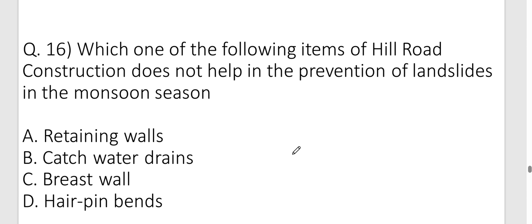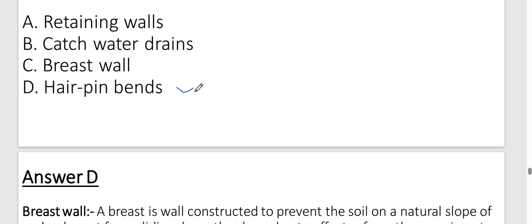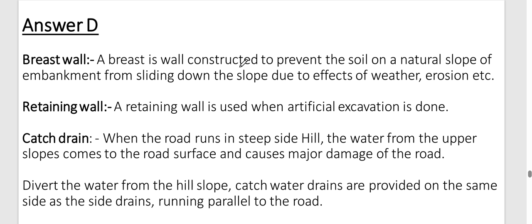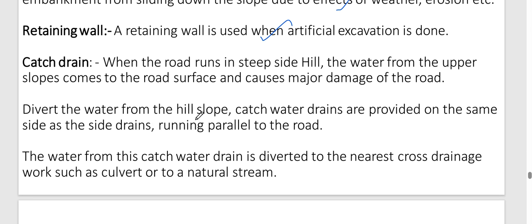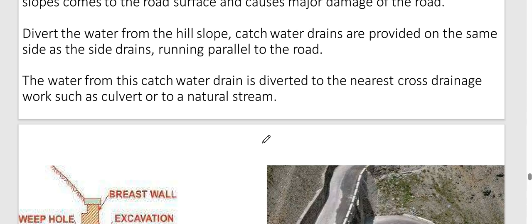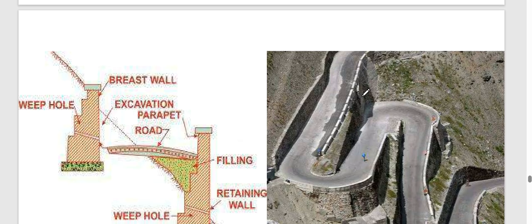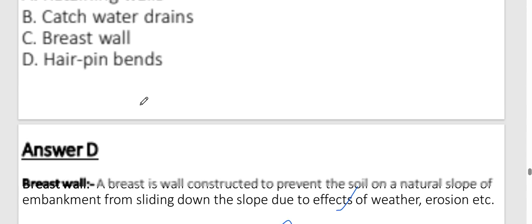Question fifteen: Which item of hill road construction does NOT help prevent landslides in monsoon season? The answer is hairpin bands — they are not used for landslide prevention. Breast wall prevents soil on natural slope or embankment from sliding due to weather/erosion. Retaining wall is used when artificial excavation is done to protect slopes. Catch drain diverts water from the upper slope coming onto the road surface, running parallel to the road and diverting water to the nearest cross-drainage structure.